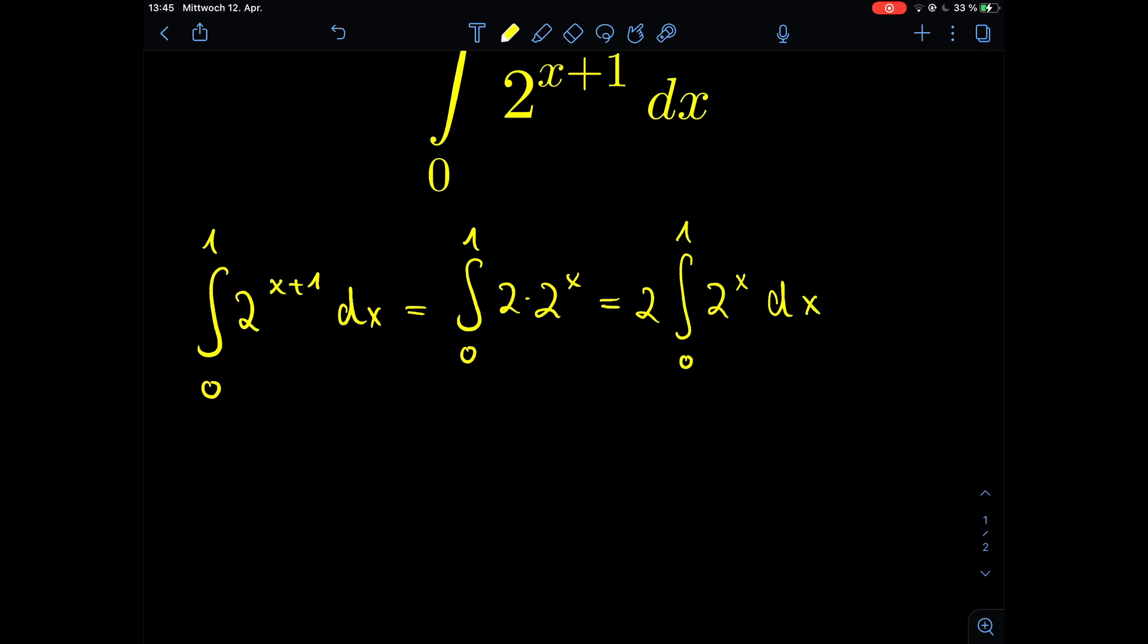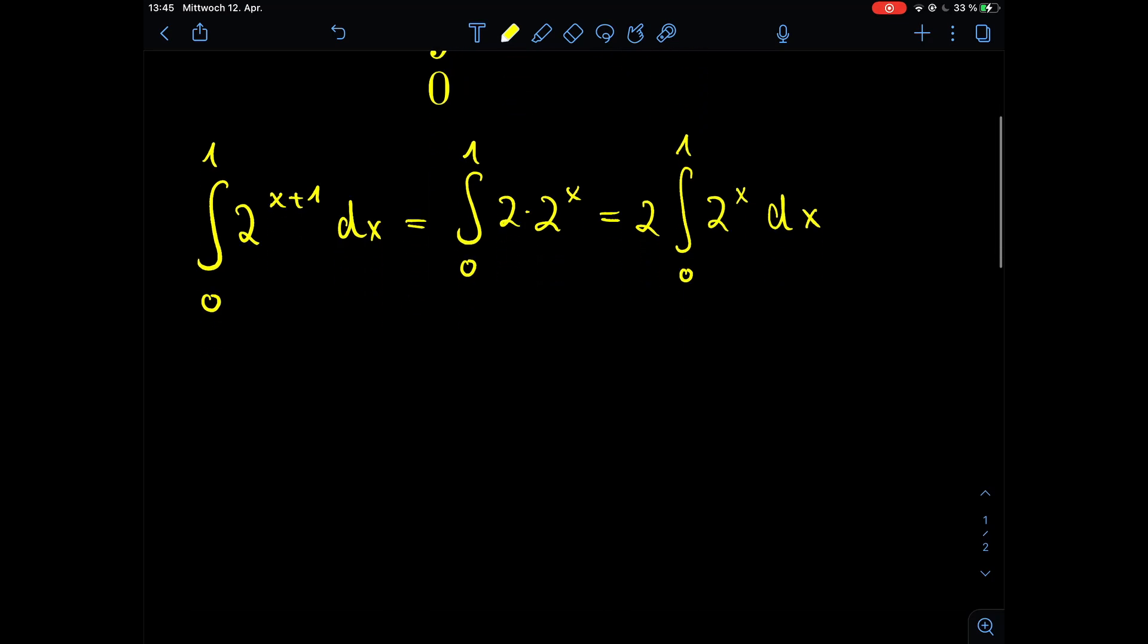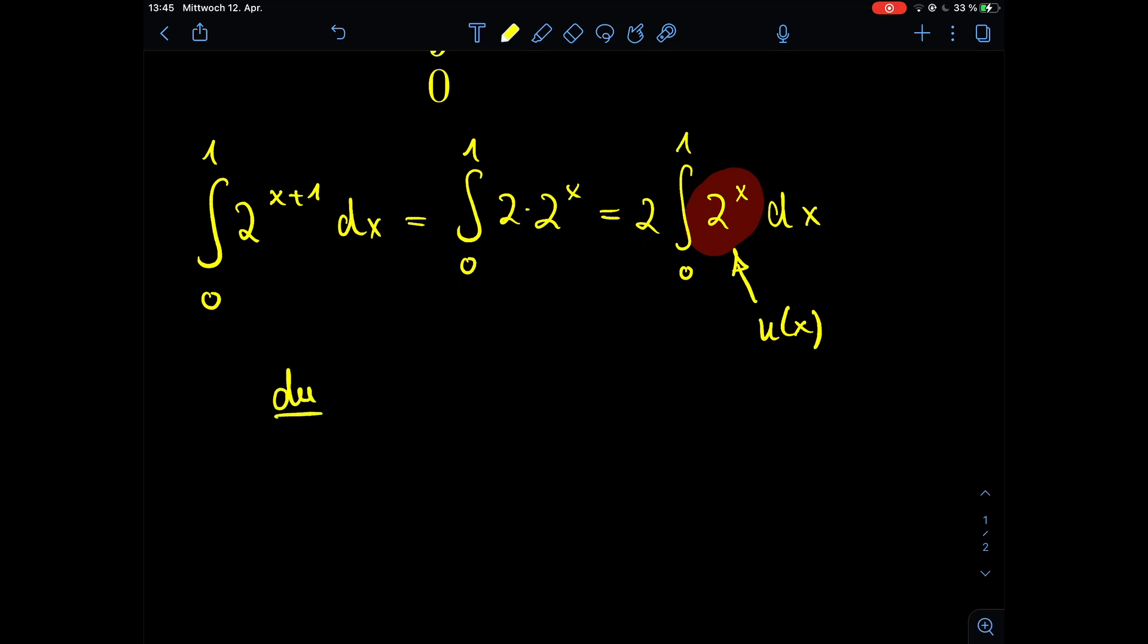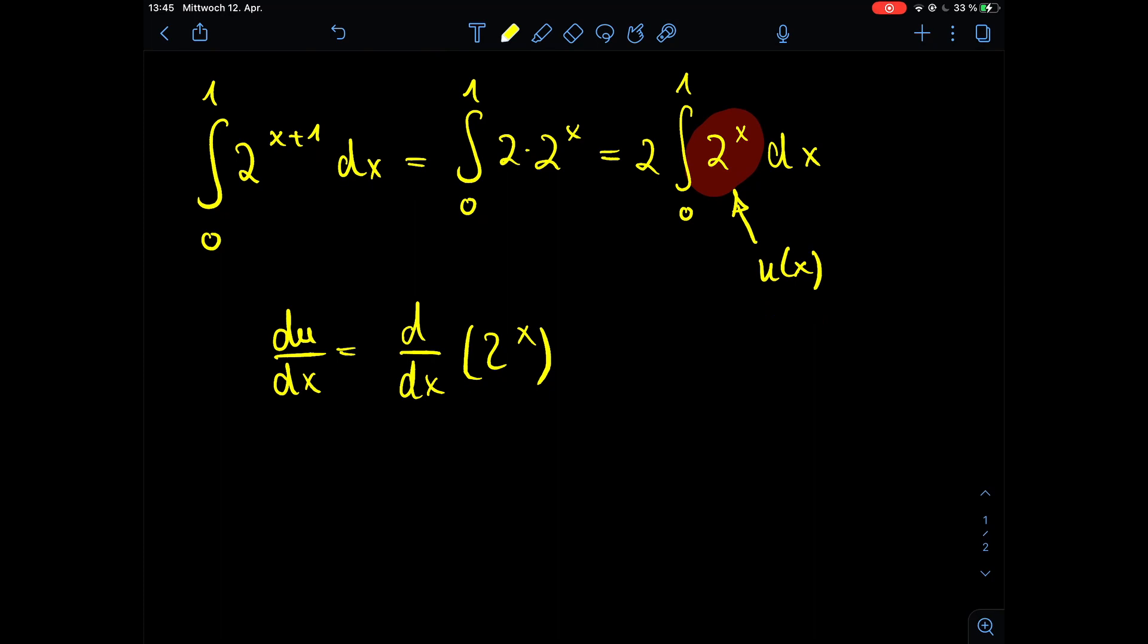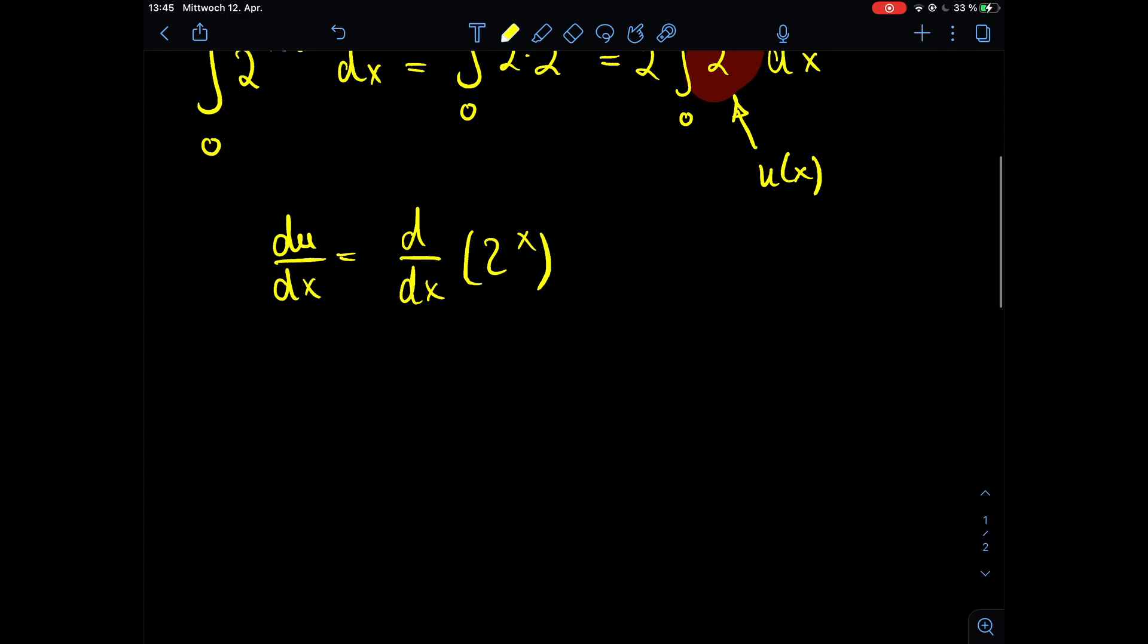So now we need to know what is the integral of 2 to the power of x. What we can do is substitute the whole thing with u of x. Then if we want to substitute it we need to calculate the derivative of u with respect to x, which means we need the derivative with respect to x of the exponential function 2 to the power of x. So we have managed to reduce the problem of integrating this exponential function to taking the derivative of this exponential function. Okay this is quite cool. How do we now calculate the derivative of this exponential function?